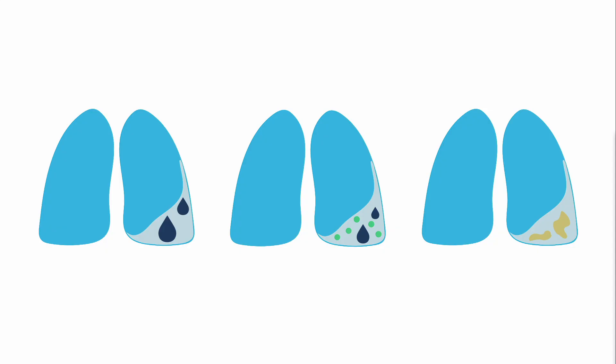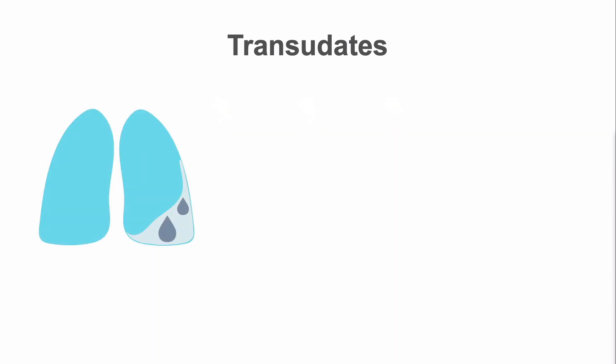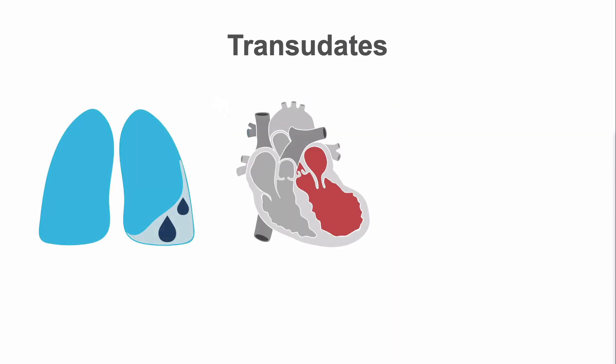But if we consider how pleural fluids are made, what their effect is on the pleura, and what we can see of the pleura, then we can begin to differentiate the different types. Transudates result from a systemic factor that causes fluid to leak into the pleural space and not from a pleural problem. They can result from increased hydrostatic pressure, as we see with congestive heart failure, or low blood protein, as we see with liver failure.